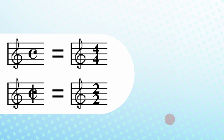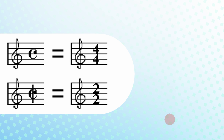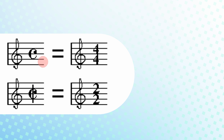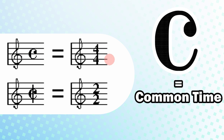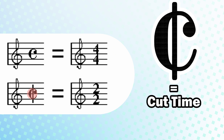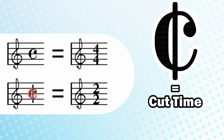So if they're mathematically equivalent, what is the difference between cut time and common time? First of all, you can tell them apart visually by the vertical line — that's how you can tell it's cut time. The C is 4-4, that's common time. And then the C with a line cutting it in half is, you guessed it, cut time.